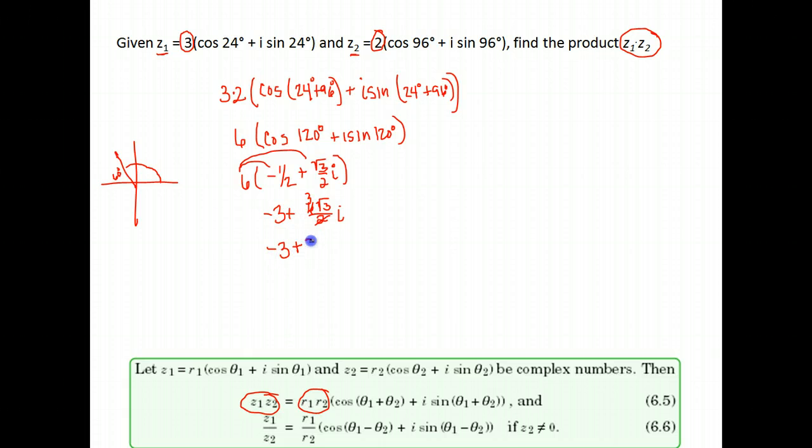So I end up with negative 3 plus 3√3 i. This is the exact value of our z1 times z2.